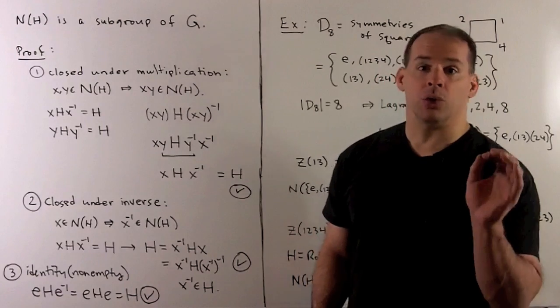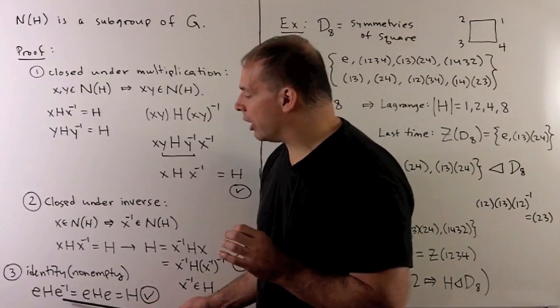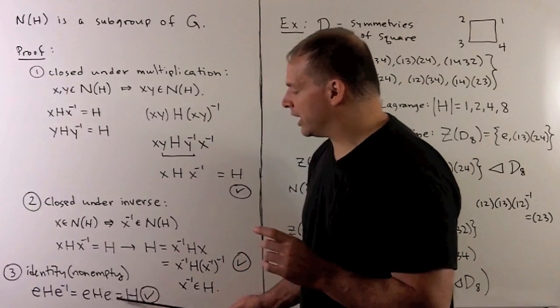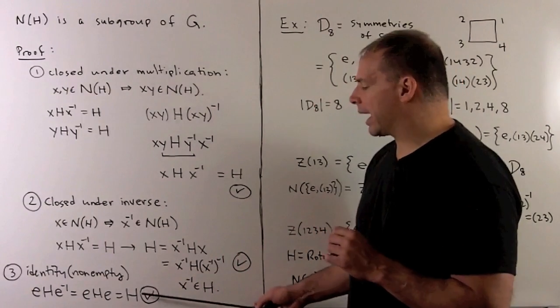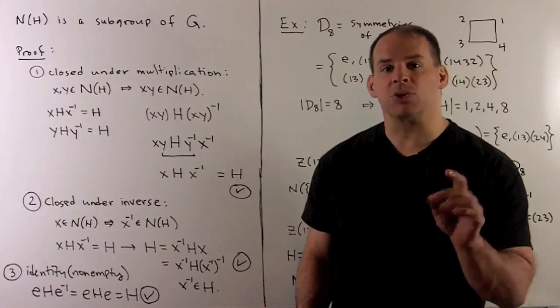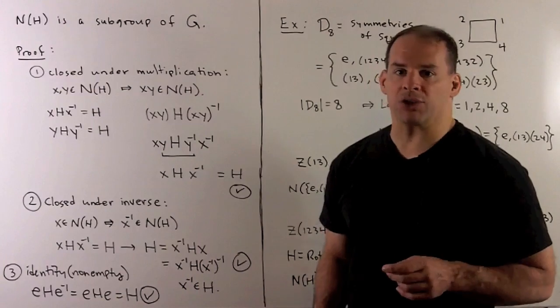Finally, the normalizer is not empty. We see right away, if we use the identity element, we have EHE. We multiply by E, we do nothing, so we get H back. So not empty. In fact, as we noted on the previous board, we have all of H inside the normalizer of H.